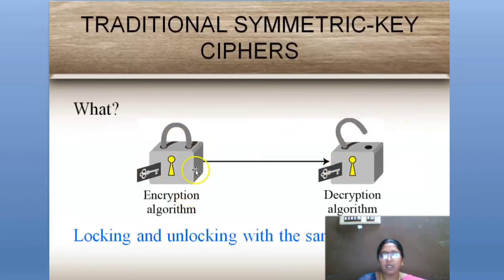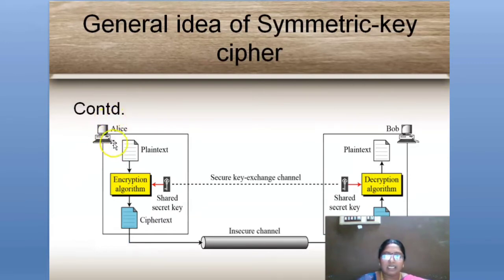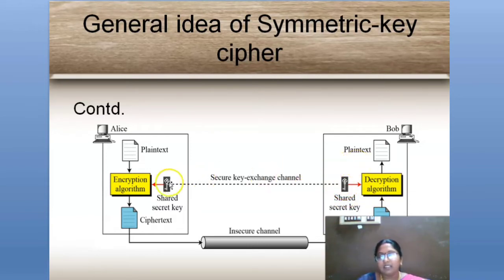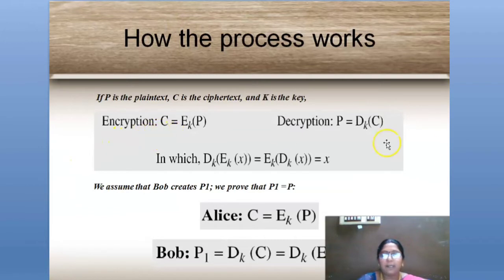We are having an encryption algorithm and a decryption algorithm. Through this entire process, we are using only a single key. The sender is called Alice and the receiver is called Bob. Alice wants to send a plaintext in a secured way to Bob, so she uses an encryption algorithm to convert the plaintext into ciphertext. The ciphertext includes a shared secret key, and both the shared key and the ciphertext go to Bob's system. Bob decrypts the ciphertext with the help of a decryption algorithm along with the shared secret key to get the plaintext. The formula is: C = E(key, plaintext) for encryption, and for decryption, we replace ciphertext to get the plaintext.